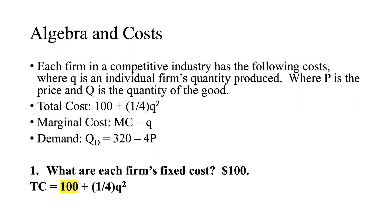So now let's talk about algebra and costs. We're presented with a problem where each firm in a competitive industry has the following costs, where Q is an individual firm's quantity produced, P is the price, and Q is the quantity of the good. So let's take these three equations: the total cost equation, the marginal cost equation, and the demand equation. Importantly, this is the demand equation for the market.